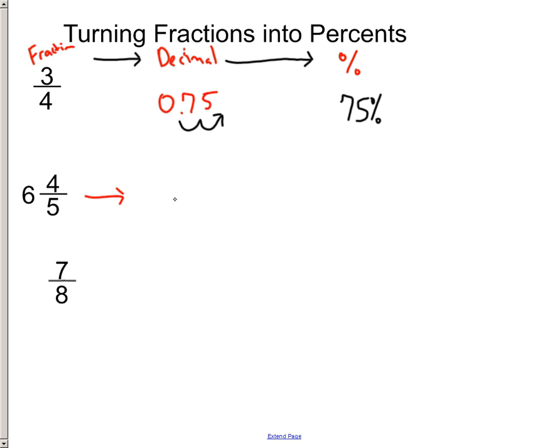Turn this into a decimal. Four divided by five is 0.8. The whole number is six, so we'll put a six in front of that. And then we've got to move it two times, so it would be 680%.